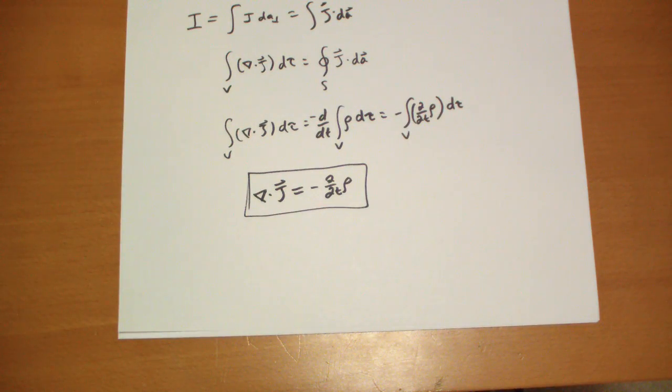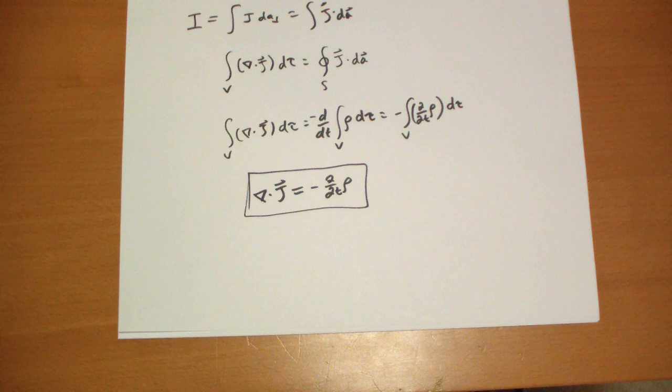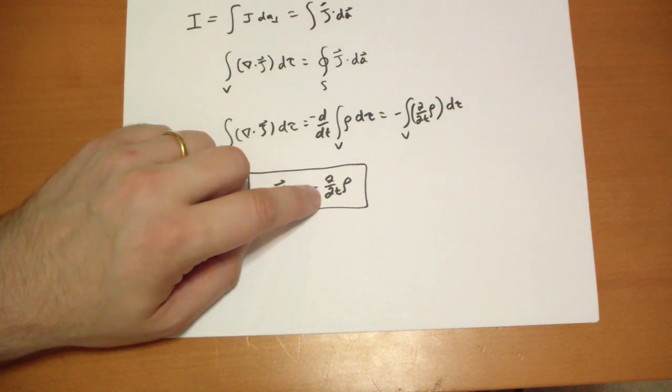And so when you have a point of convergence of the volume current, that means current is flowing into a point. So the divergence is negative here. Then that means that the charge is accumulating. So this charge is becoming bigger and bigger.